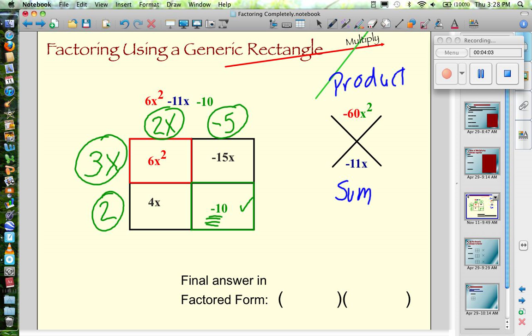So pretty much I'm done. I just need to make sure I write my answer in the proper form. So my final factors would be 2x minus 5 times 3x plus 2. And you're done.